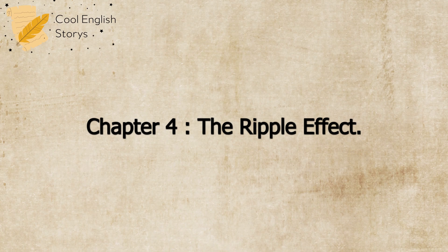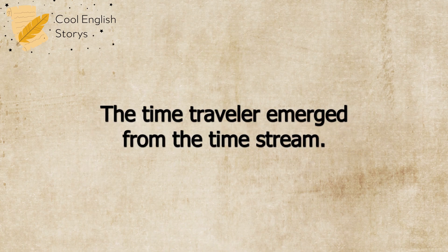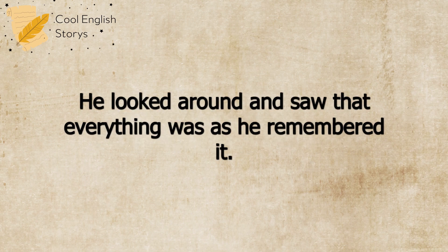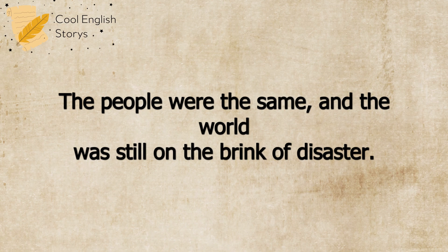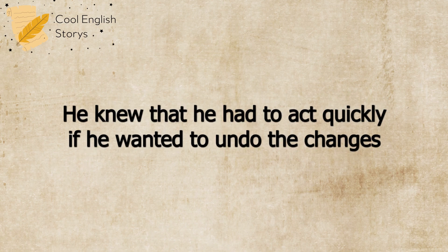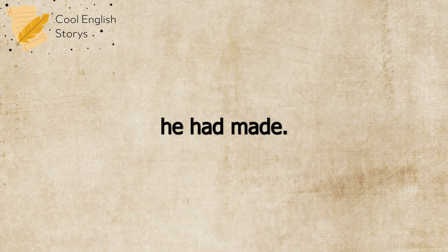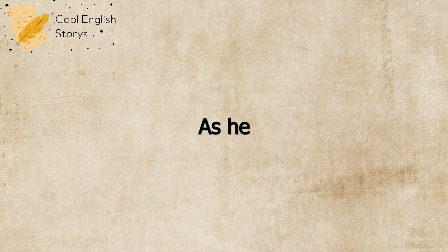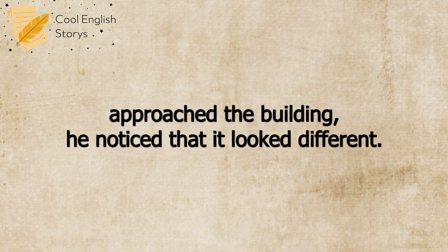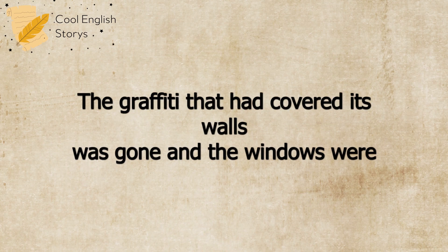Chapter 4: The Ripple Effect. The Time Traveler emerged from the time stream, back in the year he had originally traveled to. He looked around and saw that everything was as he remembered it. The streets were the same, the people were the same, and the world was still on the brink of disaster. He knew that he had to act quickly if he wanted to undo the changes he had made. He retraced his steps to the location where he had stopped the secret society from carrying out their plan. As he approached the building, he noticed that it looked different. The graffiti that had covered its walls was gone, and the windows were intact.